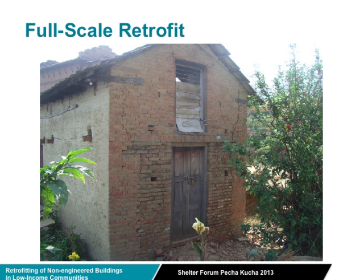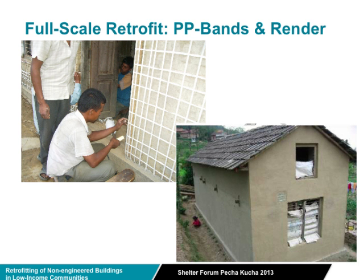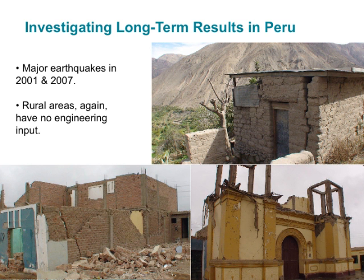This was an application of the retrofit on a real house, allowing the masons to apply what they've learned on a full-size structure. It shows some of the additional features needed for a full-scale retrofit — a base beam cast into the wall to give a good anchor, and a ring beam built at the top with proper tie-in to the roof.